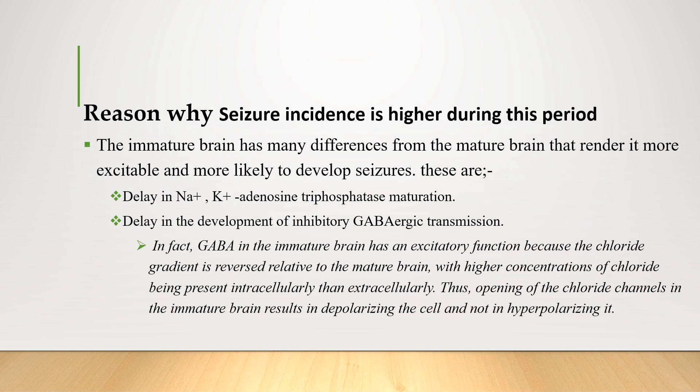The immature brain has many differences from the mature brain that render it more excitable and more likely to develop seizures. First, there is a delay in sodium-potassium ATPase maturation, and the other is a delay in the development of inhibitory GABAergic transmission. In fact, GABA in the immature brain has an excitatory function because the chloride gradient is reversed relative to the mature brain, with higher concentration of chloride present intracellularly than extracellularly. Thus, opening of the chloride channel results in depolarizing the cell rather than hyperpolarizing it.